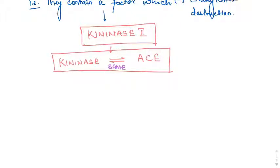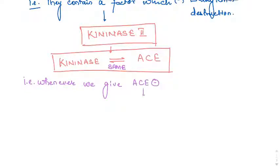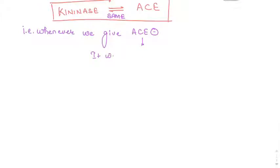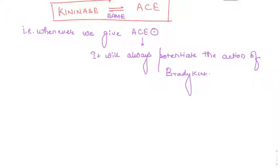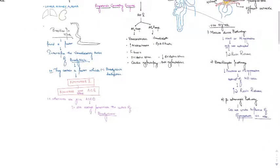If kininase is inhibited, then bradykinin is more available for action. Since bradykinin is an inflammatory mediator, more availability leads to more vasodilation. With ACE inhibitors, many side effects are related to bradykinin potentiation, which we will study in the ACE inhibitors section. Whenever ACE inhibitors are used, they potentiate the actions of bradykinin.